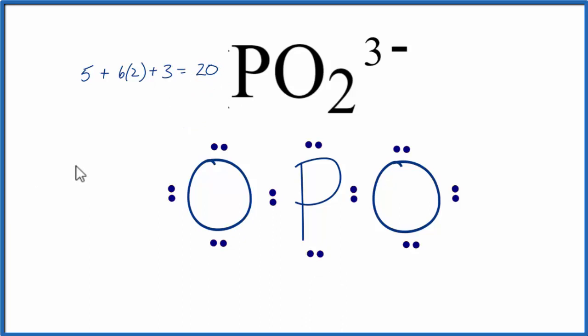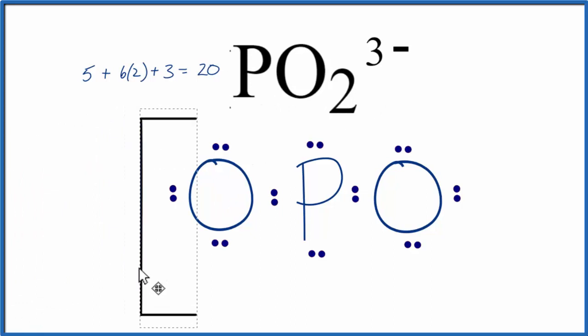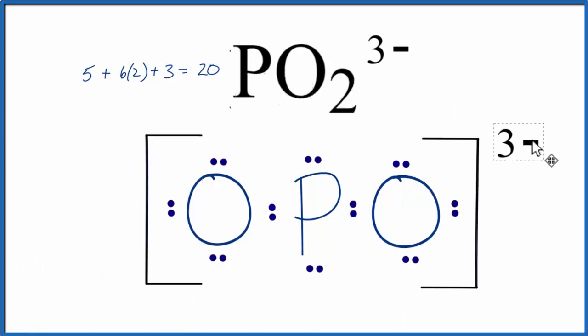So that's it. This is the Lewis structure for PO2³⁻. We should put brackets around this to show that it's an ion. We should also put a 3 outside of the brackets to show the charge. This is Dr. B with the Lewis structure for PO2³⁻, the hypophosphite ion. Thanks for watching.